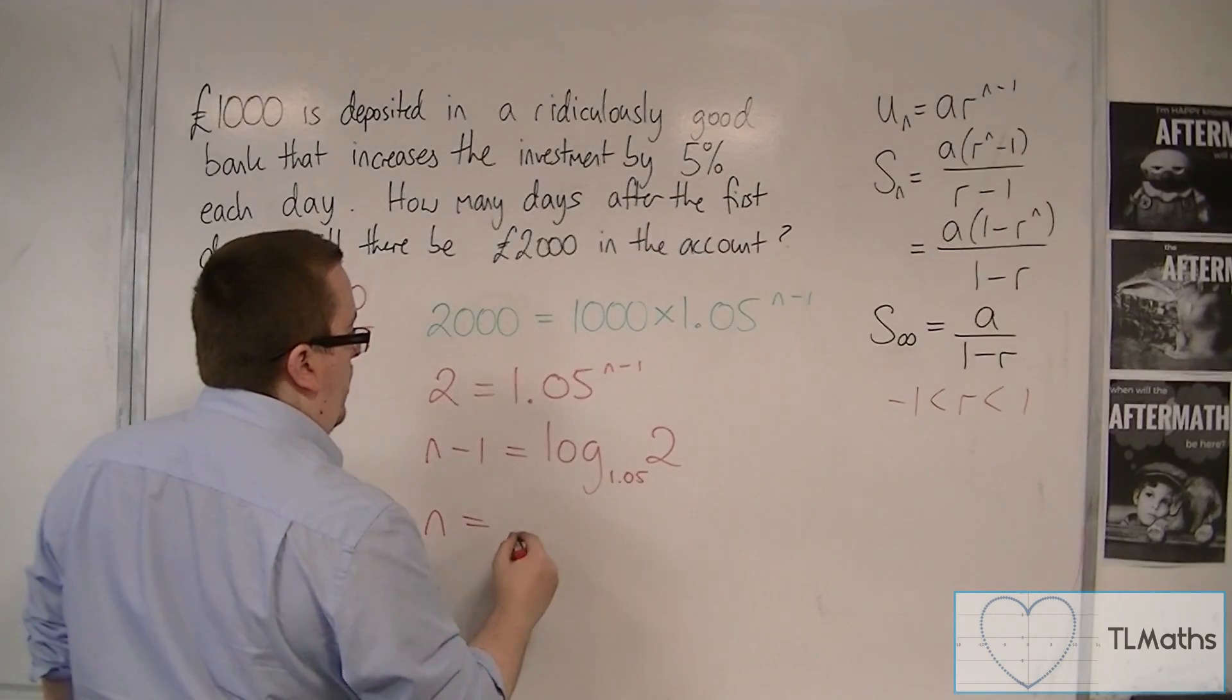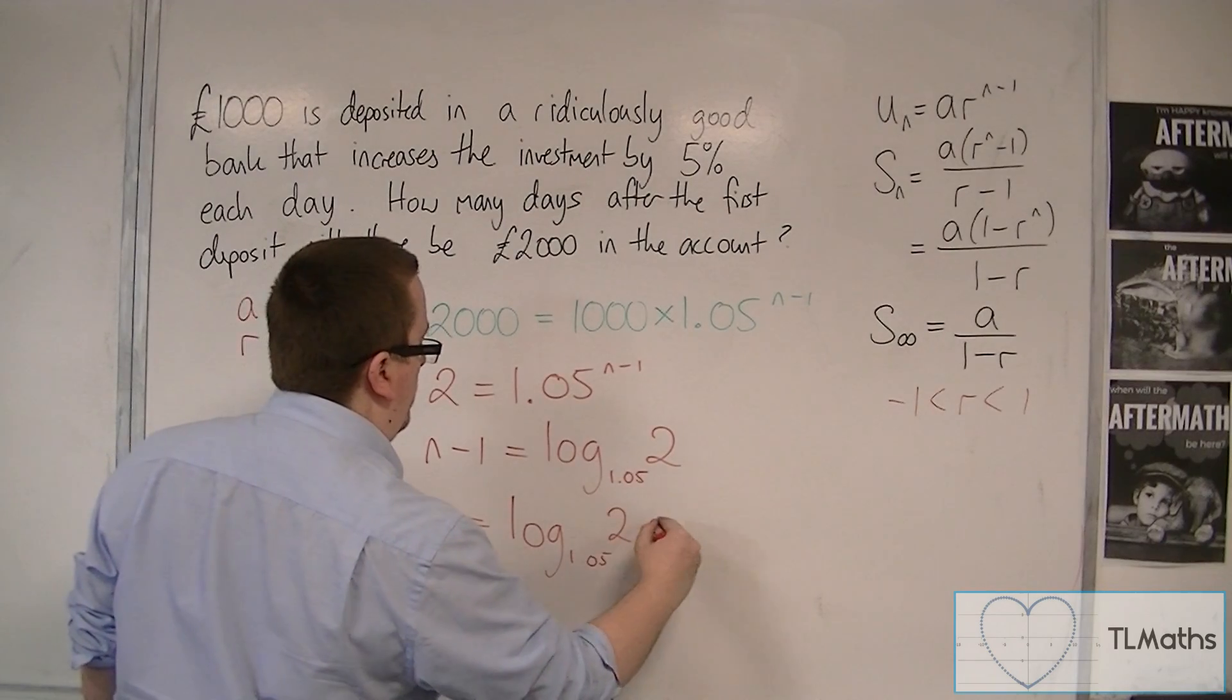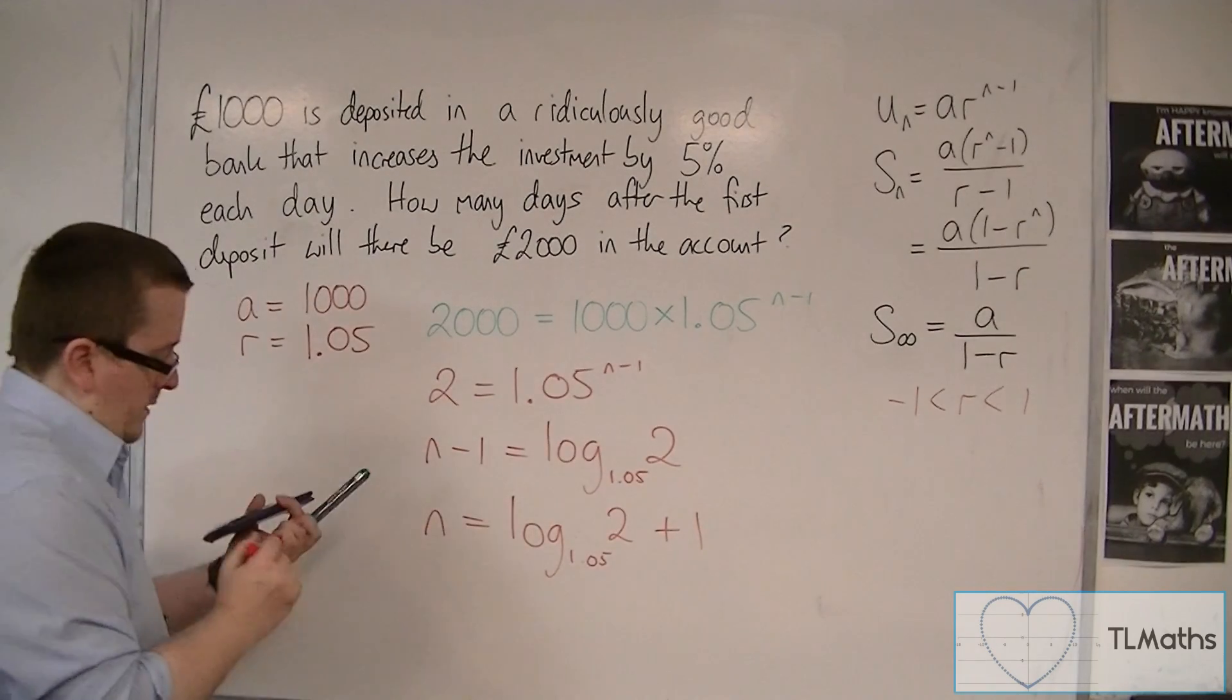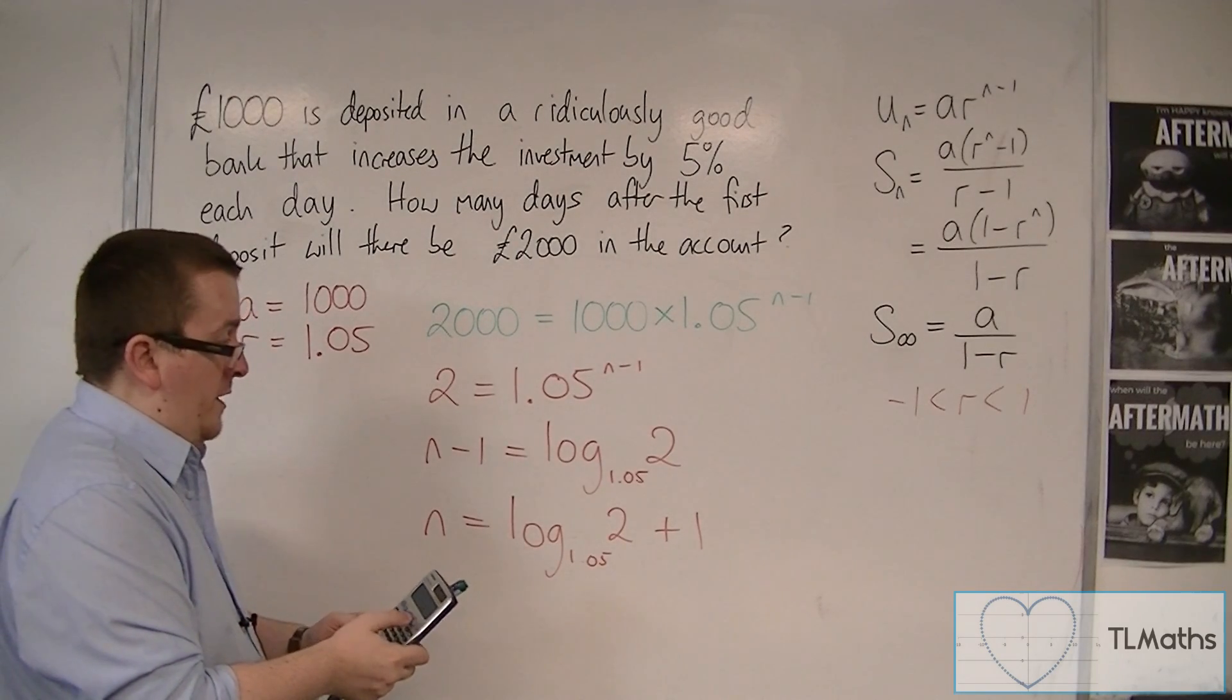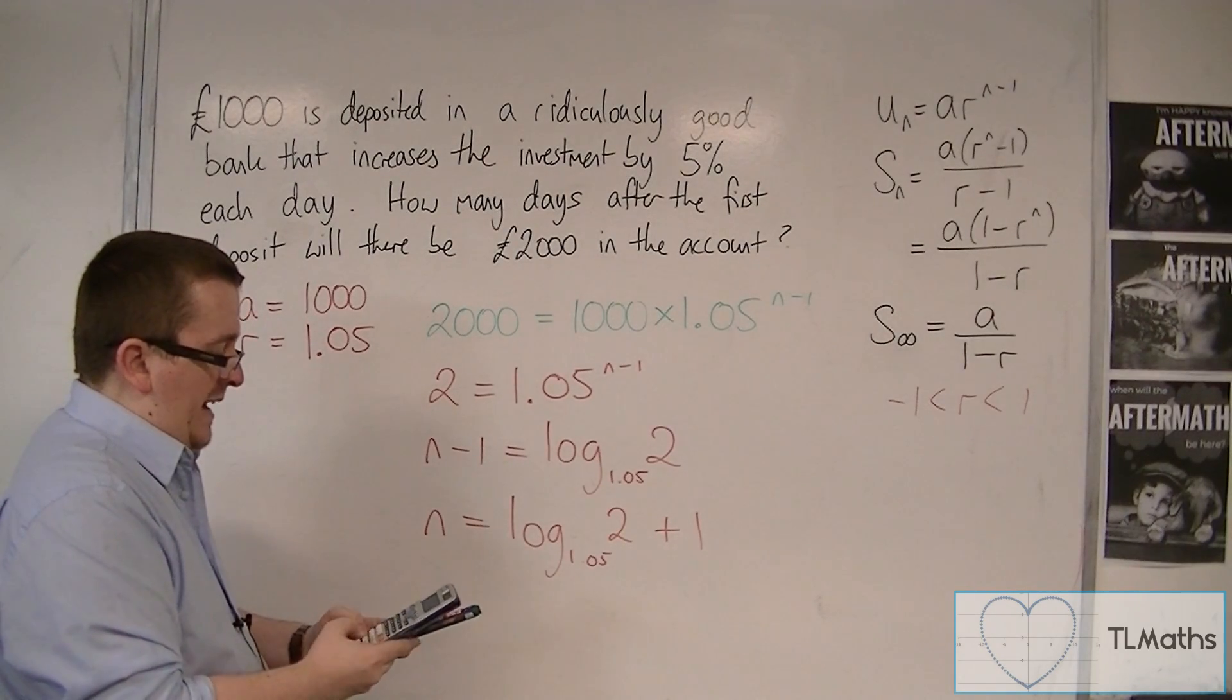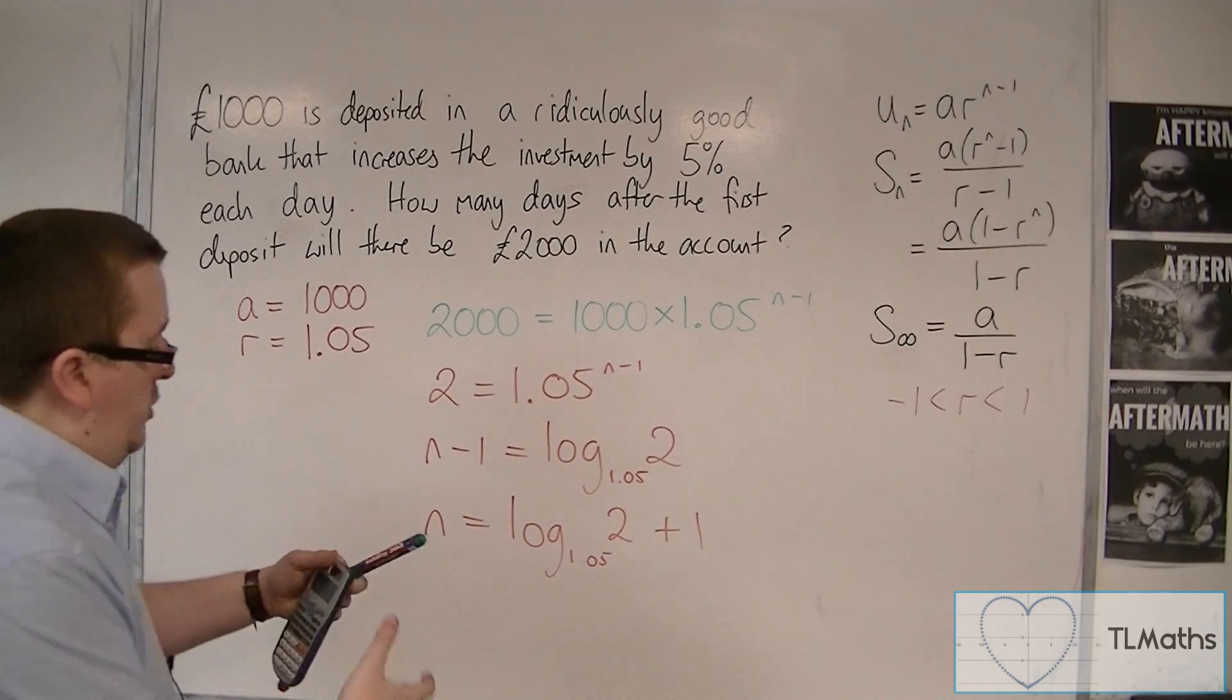And then we can add 1 to both sides, so log of 1.05 of 2 plus 1. So let's put that into the calculator, log of 1.05 of 2, and then add 1 to that, and we get 15.2.